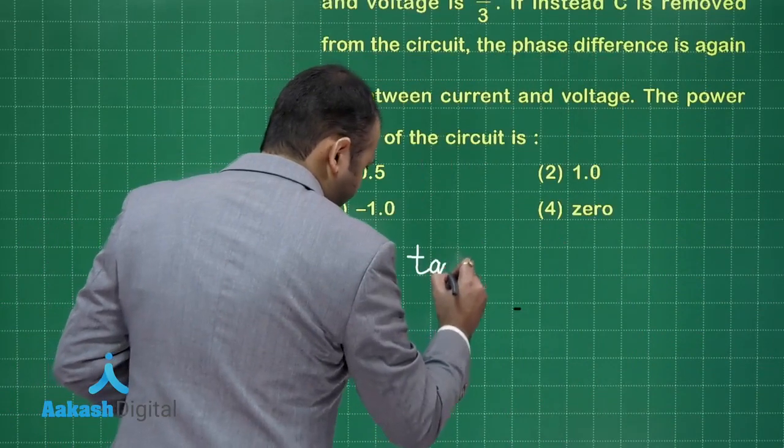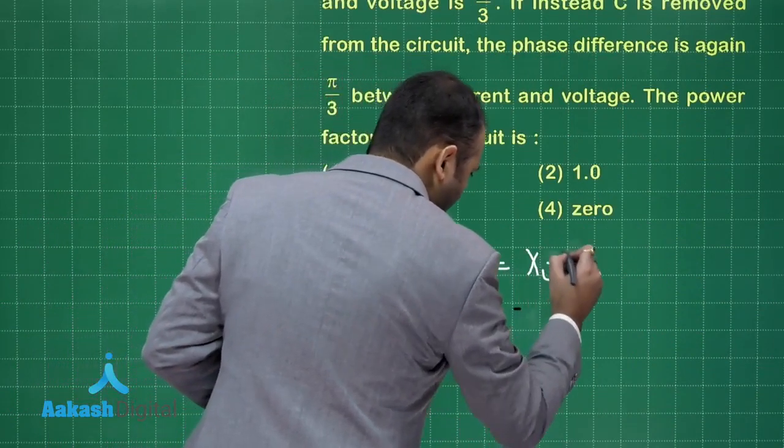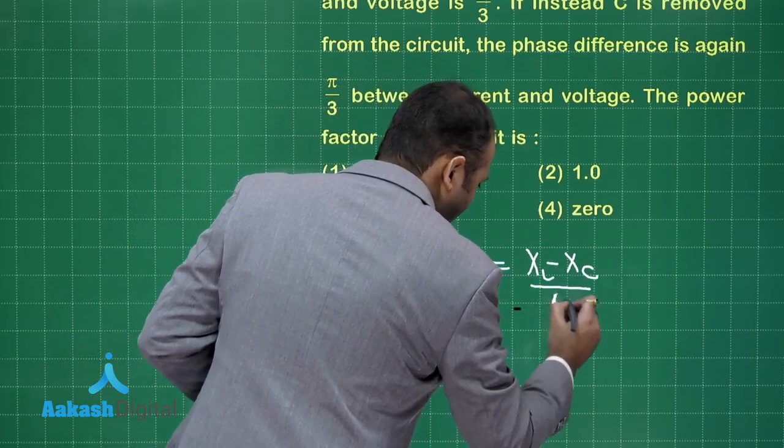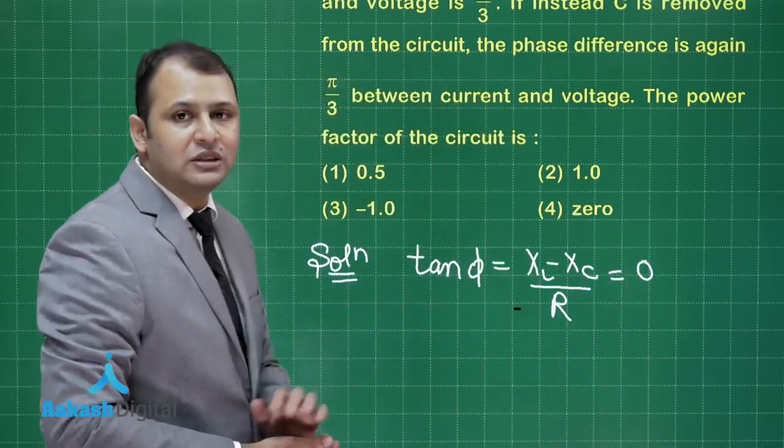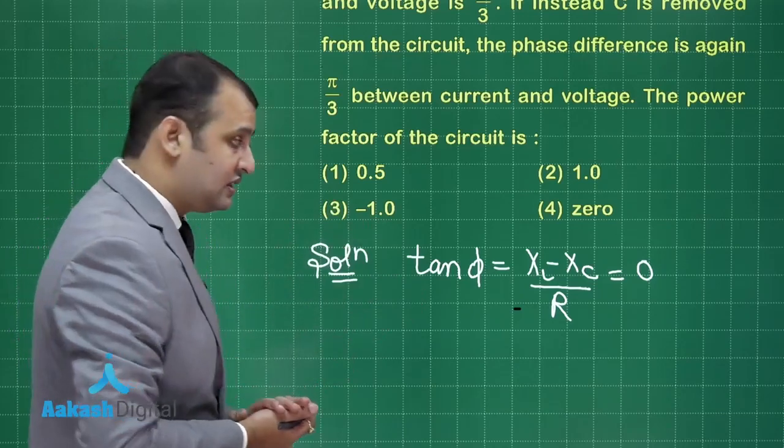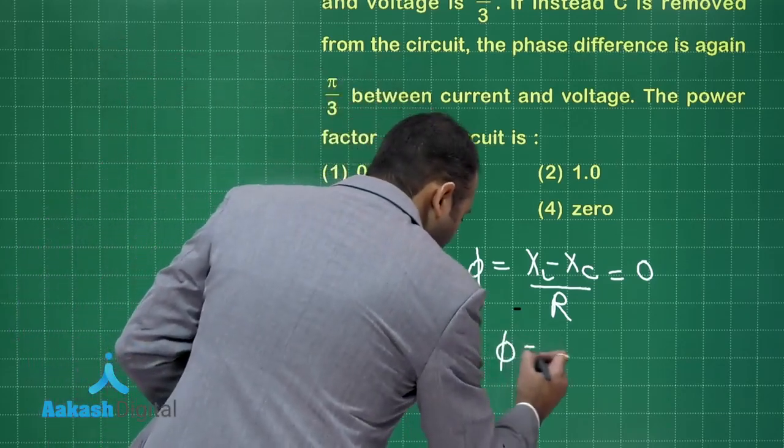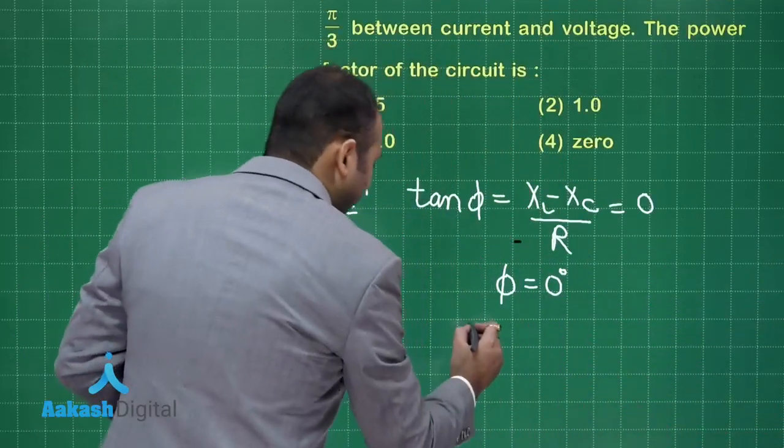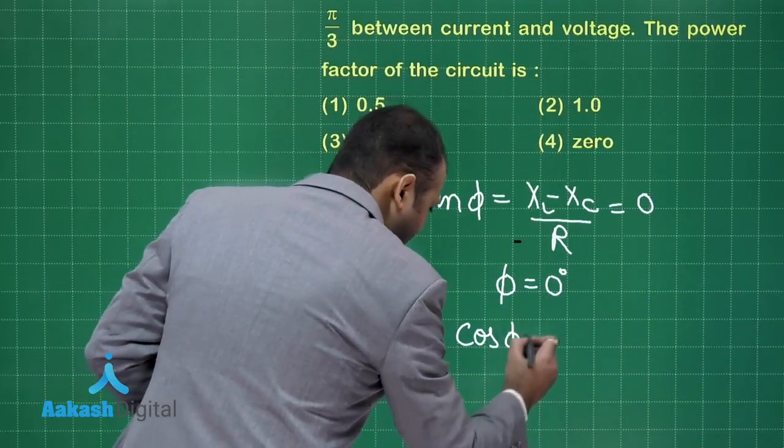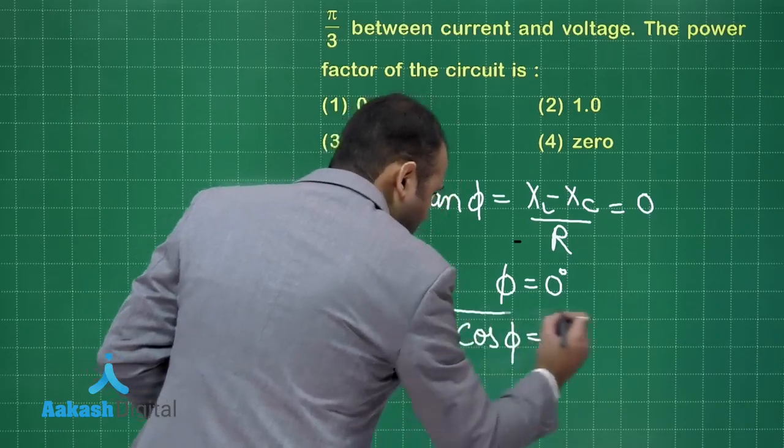Tan phi can be written as XL minus XC upon R which would be 0, right? Because XL and XC should be same. Then only the phase difference can remain same. So phi is equals to 0 degree. And in order to find the power factor, what is power factor? Power factor is basically cos phi and cos 0 would be equal to 1.